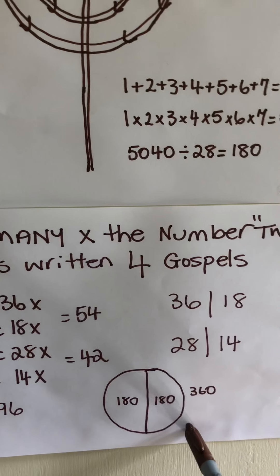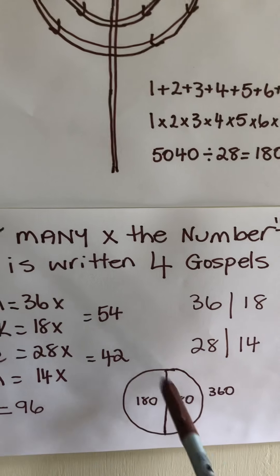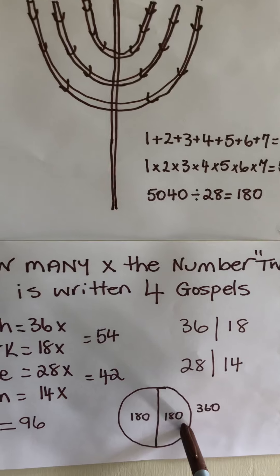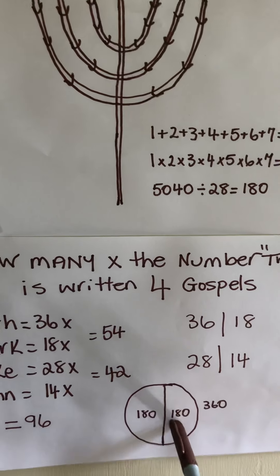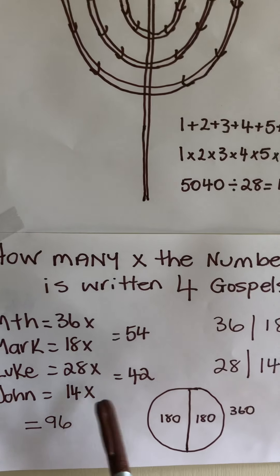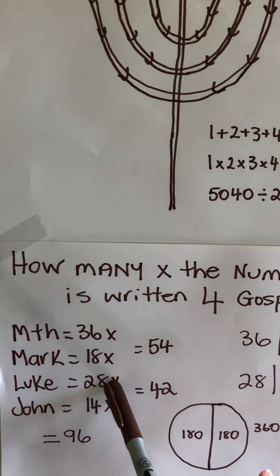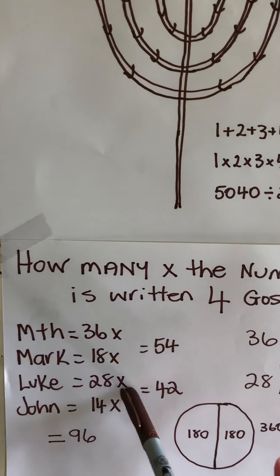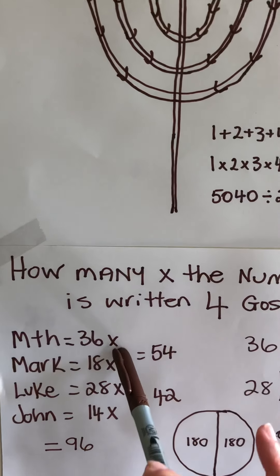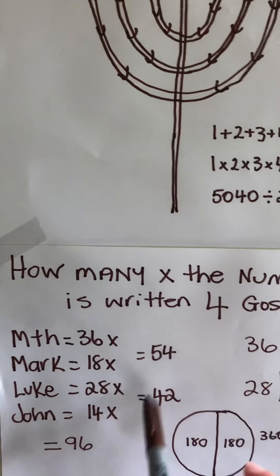We have a 360 with a dividing line giving us two sets of 180. We have 28 with a dividing line giving us two sets of 14. We have 36 with a dividing line giving us two sets of 18.